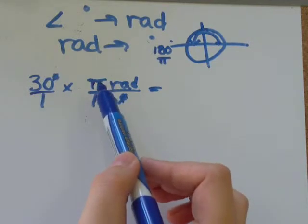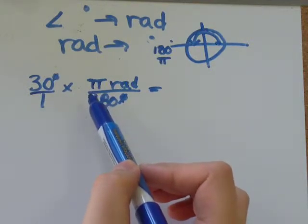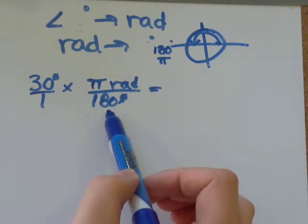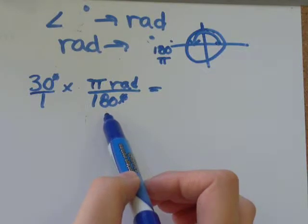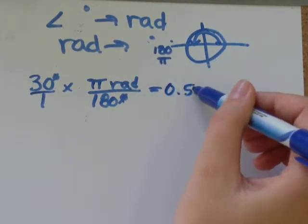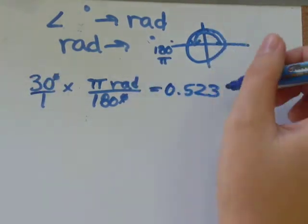I'll go 30 times pi, and that equals 94.247 divided by 180 equals 0.523. My degree units cancelled out, so I'm just left with radians.